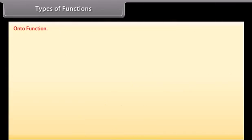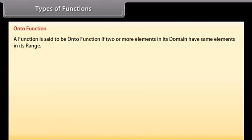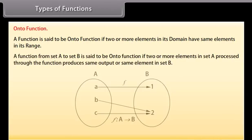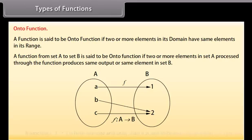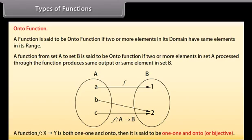Onto function: A function is said to be an onto function if two or more elements in its domain have the same elements in its range, or a function from set A to set B is said to be onto function if two or more elements in set A processed through the function produce the same output or same element in set B. A function f from x to y that is both one-one and onto is said to be bijective.